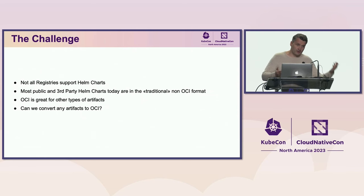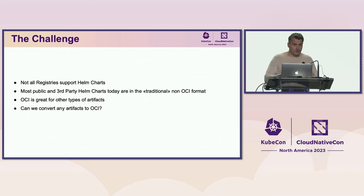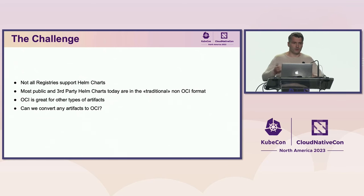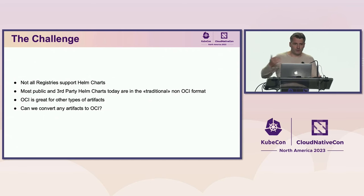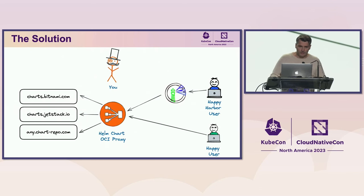But the majority of the registries is in OCI format, and a lot of people are adopting OCI formats inside their organization and have developed workflows for that. So we have a clash here, and it would be very nice if we could adopt it to use OCI everywhere. And can we solve the problem? Yes, we can. Currently, people do it by just manually fetching artifacts, converting them, and pushing them to a registry. But you can also do it dynamically. And this is what we built.